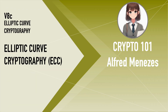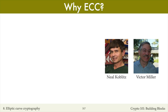Today we'll begin looking at elliptic curve cryptosystems. We will describe some elliptic curves that have been standardized and are commonly used in practice, including P256, P384, and Curve 25519. These elliptic curves are defined over the integers modulo p, where p has a special form. We'll explain why the special form of p leads to faster implementations. Elliptic curve cryptography was invented independently by Neil Koblitz and Victor Miller in 1985.